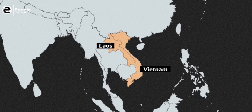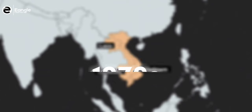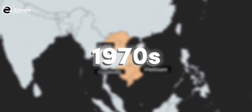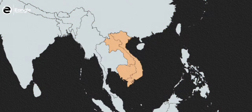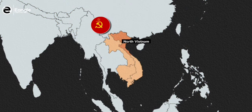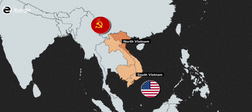The Vietnam War was a protracted military conflict that took place in Vietnam, Laos, and Cambodia from the mid-1950s to the mid-1970s. It was a highly divisive and controversial conflict that pitted the communist forces of North Vietnam against the government of South Vietnam, which was supported by the United States and other Western powers.